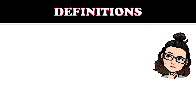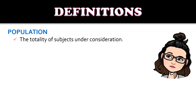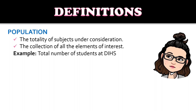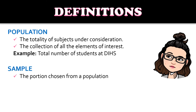First, let us define some terms. We have population — the totality of subjects under consideration, and the collection of all elements of interest. For example, the total number of students in Dasmarinas Integrated High School represents the population. Next, we have sample — the portion chosen from a population, the subset of the population.